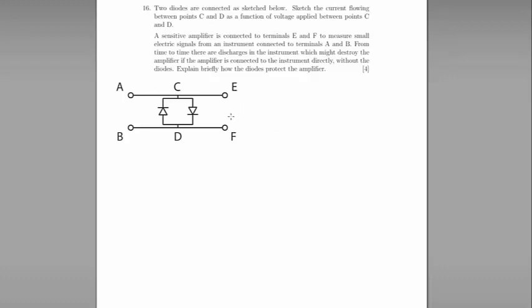Question number 16. Two diodes are connected as sketched here. Sketch the current flowing between points C and D as a function of voltage applied between points C and D.